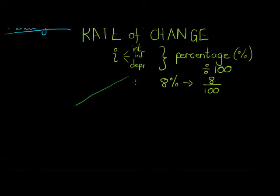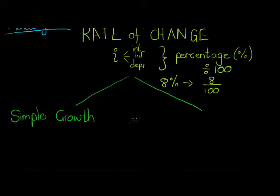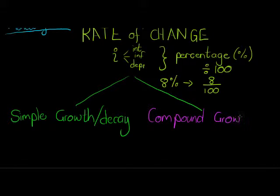Now with that in mind, we get two types of changes. Obviously something can grow or something can depreciate. We're going to use growth and decay. And we can get simple growth or decay. Decay just means it decreases over time. Or we can get compound growth or decay.